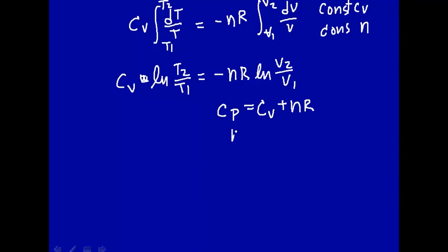So that nR is equal to the heat capacity at constant pressure minus heat capacity at constant volume. Let's substitute that in there, so now we have heat capacity cV, ln of T2 over T1,